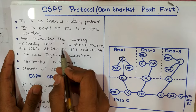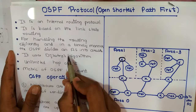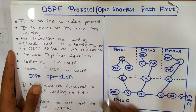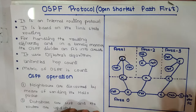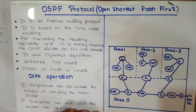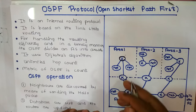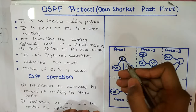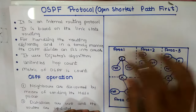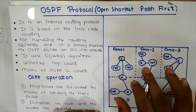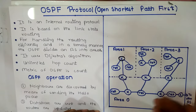For handling routing efficiently and in a timely manner, OSPF divides an autonomous system into areas. The autonomous system may contain different routers, so in order to manage it efficiently, OSPF divides the whole autonomous system into different areas — such as area 1, area 2, area 3, and area 0 — so that it can be managed very efficiently and there will be less overhead.